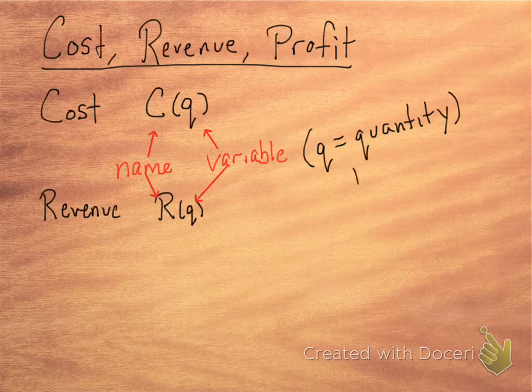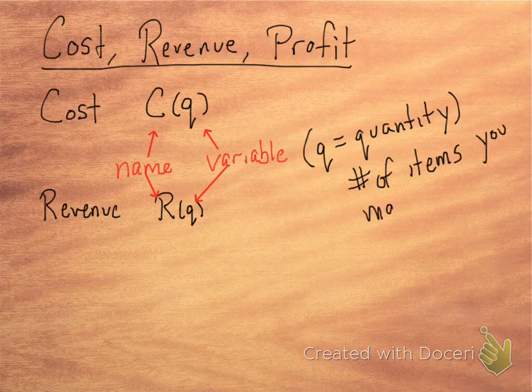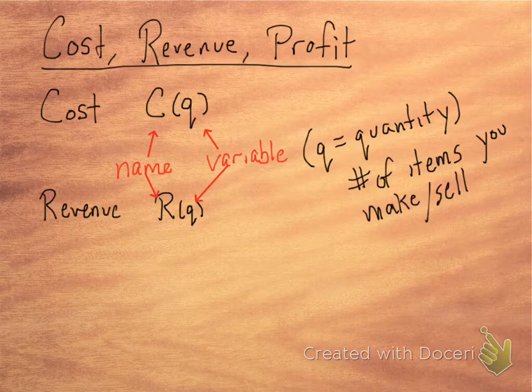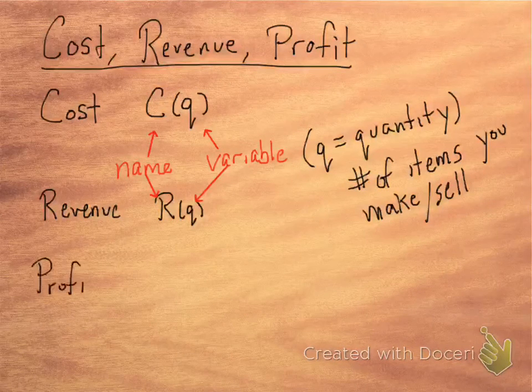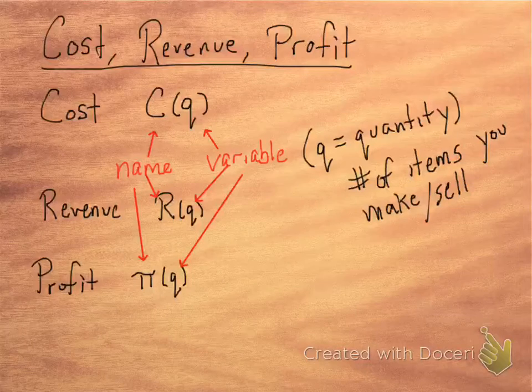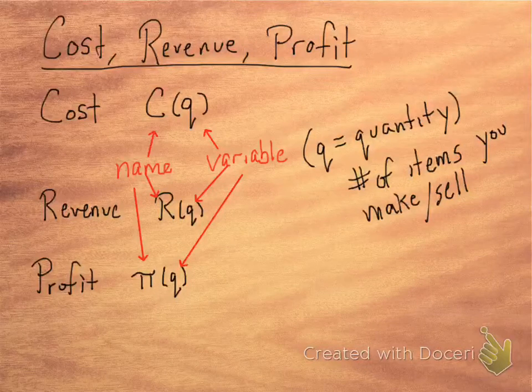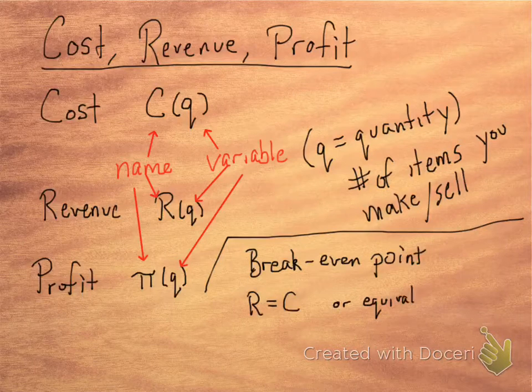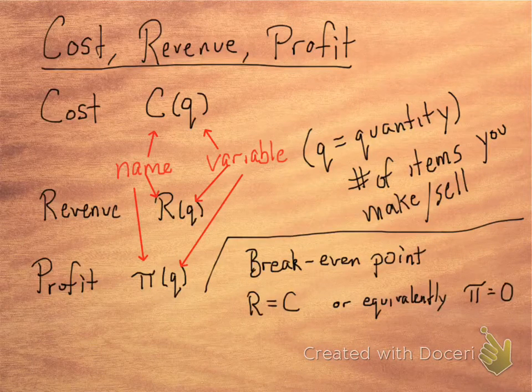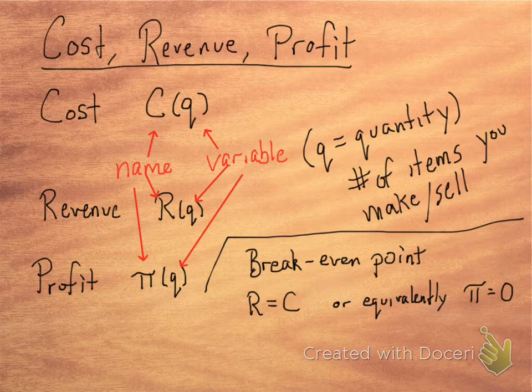There's also that revenue function, R of Q, where Q is still the quantity—the number of items you make or sell as a business. And then profit, π of Q. There's also the break-even point, which is when the revenue is equal to the cost, or equivalently, when the profit is zero. It's when your business doesn't make any money in profit.